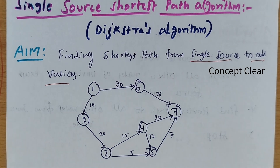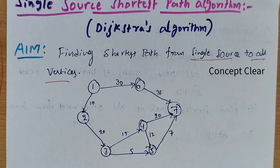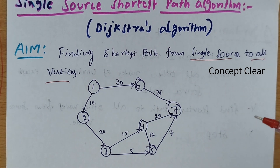For example, in the given graph, we have to select any one vertex, and from that vertex we have to find out the shortest path to all the other vertices.